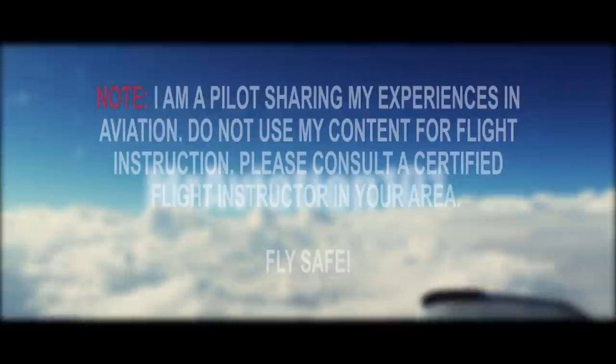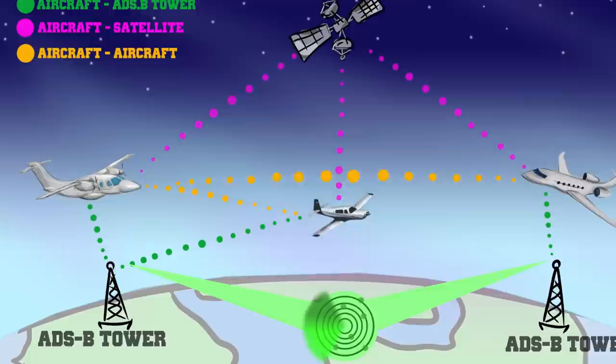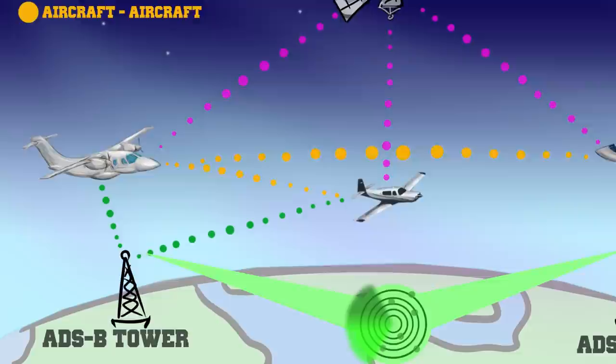ADS-B is a new way for aircraft to transmit their position to air traffic control and to each other. Automatic Dependent Surveillance Broadcast, or ADS-B, is a surveillance technology in which an aircraft determines its position via satellite navigation and periodically broadcasts it, enabling it to be tracked by both air traffic control and other airplanes equipped with ADS-B receivers.